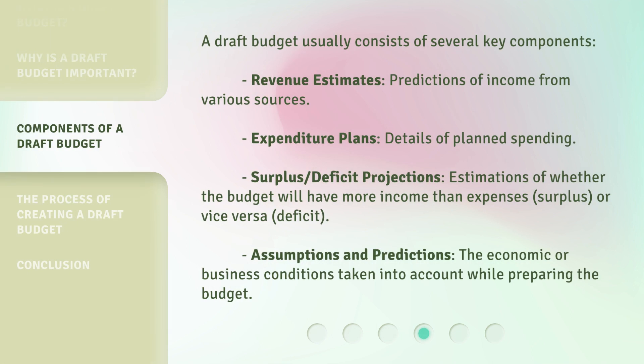A draft budget usually consists of several key components: Revenue estimates — predictions of income from various sources; Expenditure plans — details of planned spending; Surplus/deficit projections — estimations of whether the budget will have more income than expenses (surplus) or vice versa (deficit); and Assumptions and predictions — the economic or business conditions taken into account while preparing the budget.